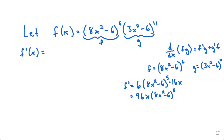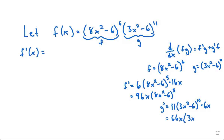Now for g prime, we again apply the chain rule — outside and inside functions. Using the power rule, bring down the 11, leave the inside function 3x squared minus 6 the same, subtract 1 from the power, then multiply by the derivative of the inside which is 6x (the constant goes to 0). Simplifying: 11 times 6 is 66, so g prime equals 66x times 3x squared minus 6 to the power of 10.